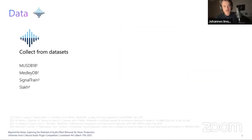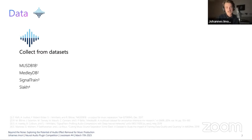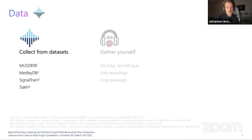Starting with data: generally there are two options. We could train only on one source in order to limit the signal statistics that the neural network needs to reconstruct, or we could gather a generic audio data set consisting of different kinds of instrumental sources and mixtures. In our study, we achieved definitely better results when training a model for one particular source.